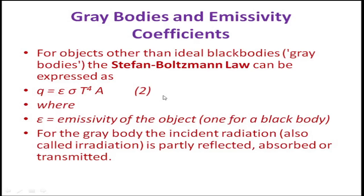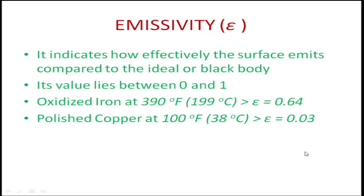Grey bodies can have any combination of values for these three properties, all ranging from 0 to 1. Examples of emissivity values: oxidized iron at 199°C has emissivity of 0.64, and polished copper at 38°C has emissivity of 0.03. These properties — emissivity, reflectivity, and transmittivity — are unitless numbers.